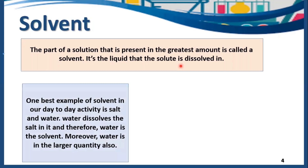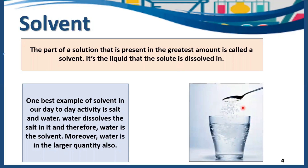One of the best examples of solvent in our day-to-day life is salt and water. Remember, salt is the solute because it is in the smaller quantity, but the water here is present in the larger quantity so it is a solvent. Moreover, it is the liquid that the solute is dissolved in. That's why it is a solvent.